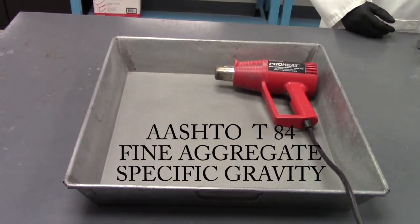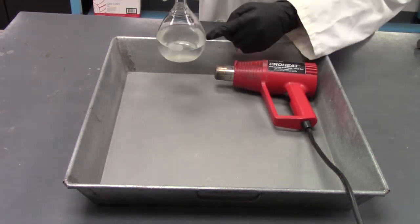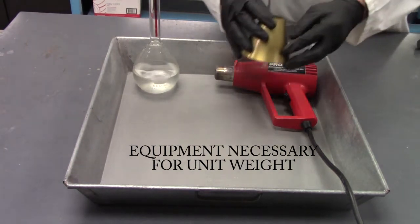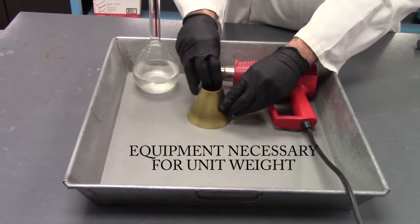Let's start by talking about some of the equipment you're going to need to run this test today. First, you're going to need a heat gun, an Erlenmeyer flask with distilled water, and a tamper cone to hold your sample.